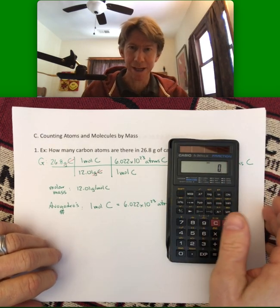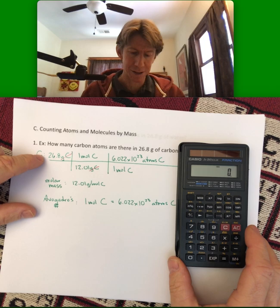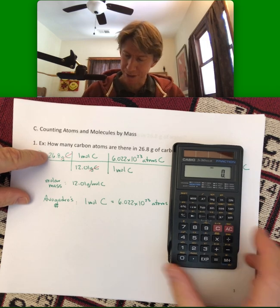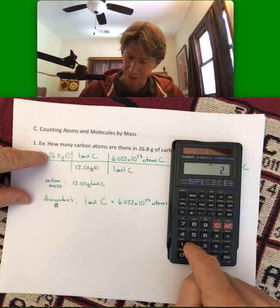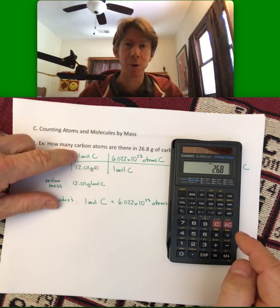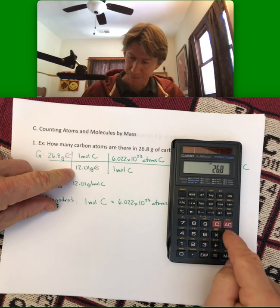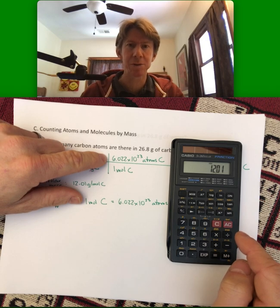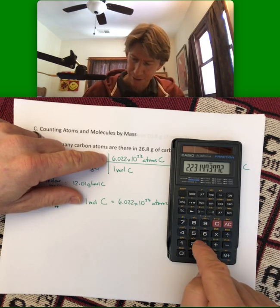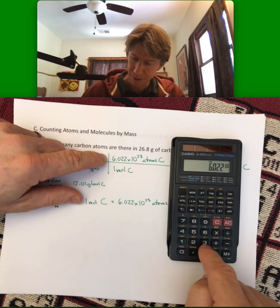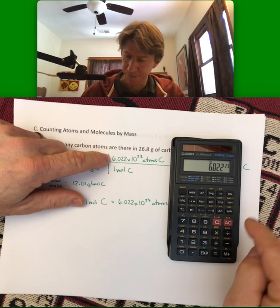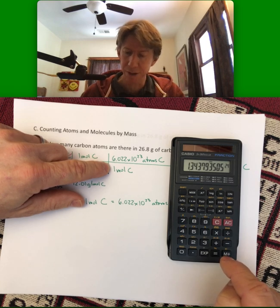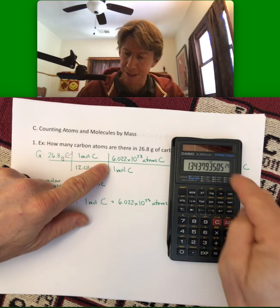Let's show you how to do the math. I like to go left to right doing my multiplications and divisions. So 26.8, then times 1, which I don't have to do, divided by 12.01, and then multiplied by 6.022 times 10 to the 23rd. And then divide by 1, which I don't have to do, so I'll just hit my equal sign. I get 1.34, et cetera, times 10 to the 24th.